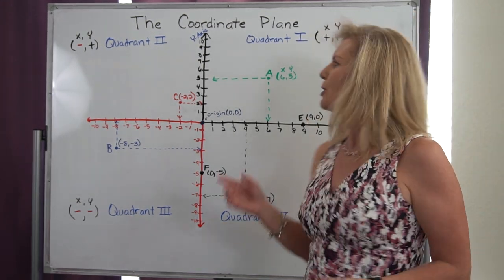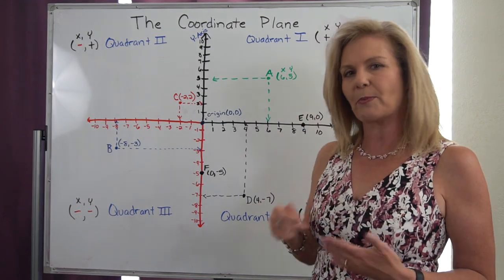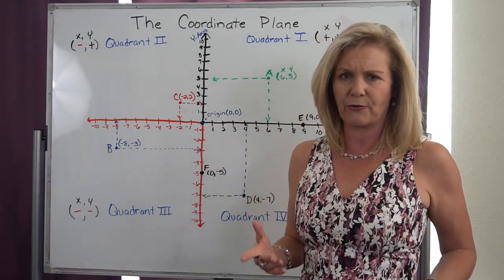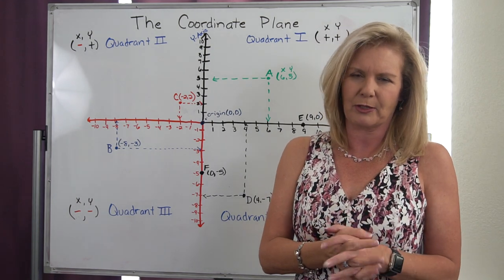The more that you graph, pretty soon you can just look at an ordered pair and you'll know if it's in quadrant 1, 2, 3, or 4. And that's when you're getting really good with the coordinate plane.